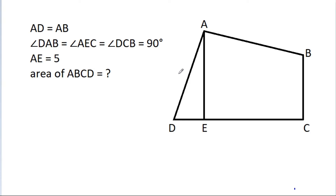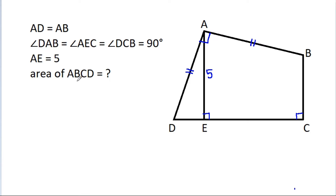In this video, we have given that AD is equal to AB, and angle DAB, angle AEC, and angle DCB are 90 degrees, and AE is 5. Then we have to find the area of ABCD.